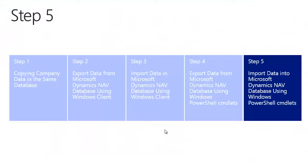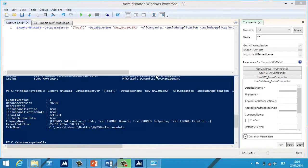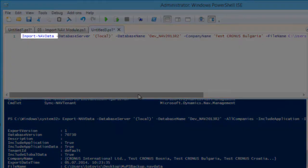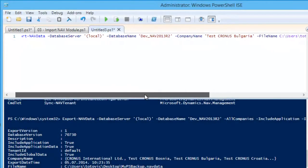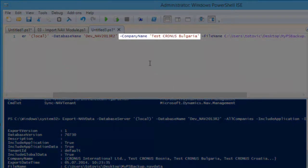In my last step I will perform the importing process from an existing .navdata file using the new commandlet Import-NAVData. With this commandlet we can import all or company-specific data into the Microsoft Dynamics NAV database from an existing .navdata file, including different data types. We still use Windows PowerShell ISE. The import process is similar to export but uses the opposite command Import-NAVData. We fill in the target database server and database name, then choose which company to import. For all companies we use -AllCompanies.